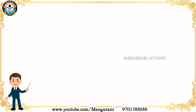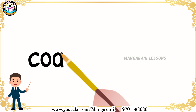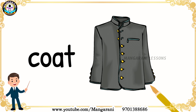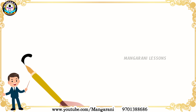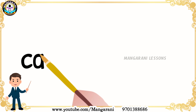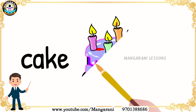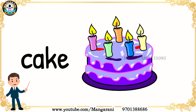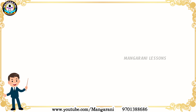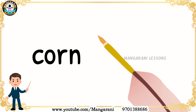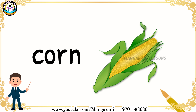C O A T — Coat. This is a coat. C A K E — Cake. This is a cake. C O R N — Corn. This is corn.